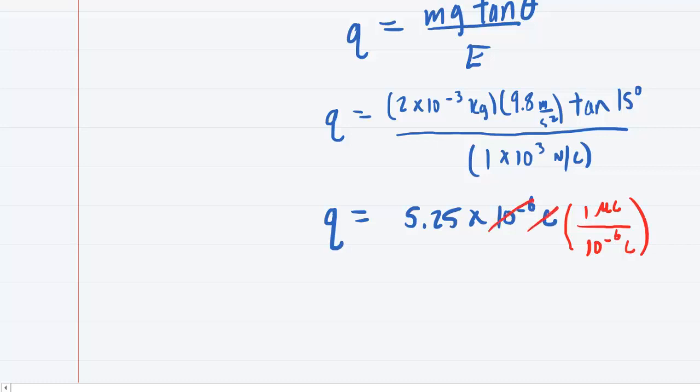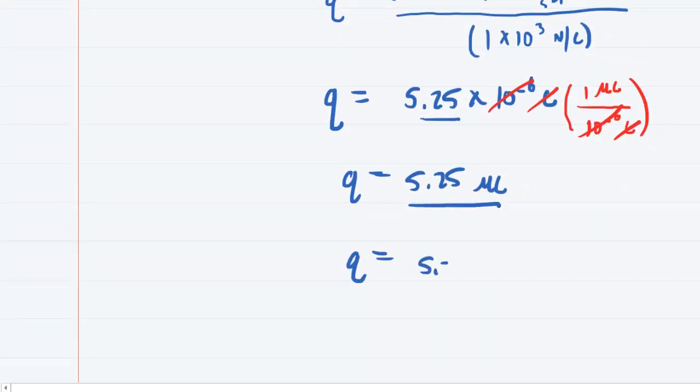you might remember that 1 microcoulomb is 10 to the minus 6th coulombs. So what happens is the 10 to the minus 6th coulombs would cancel out, and then you would multiply 5.25 by 1, and then you end up with 5.25 microcoulombs. So you can express your answer in that manner, or you can express it back in 5.25 times 10 to the minus 6th coulombs. So we'll take this one.